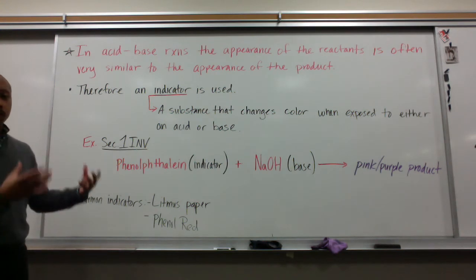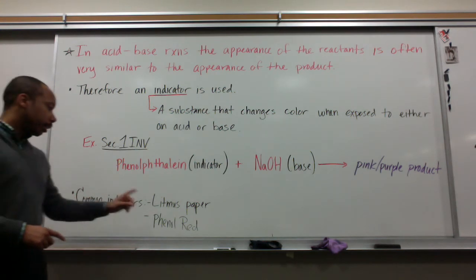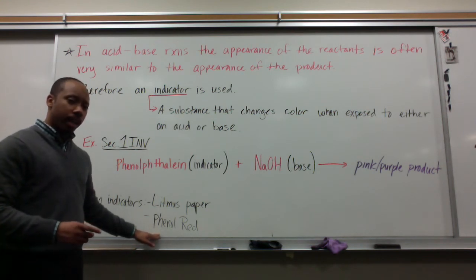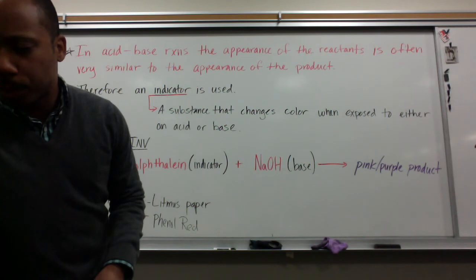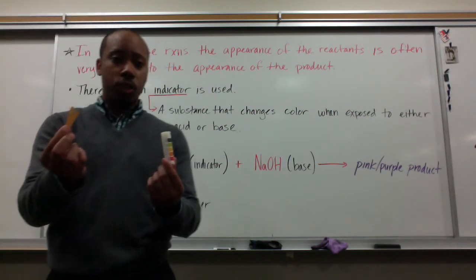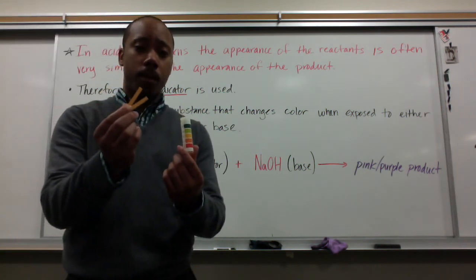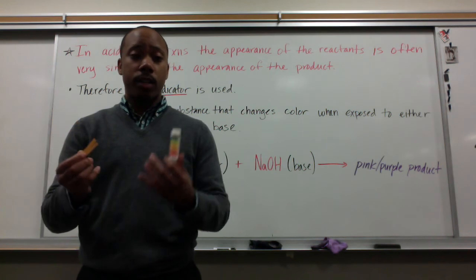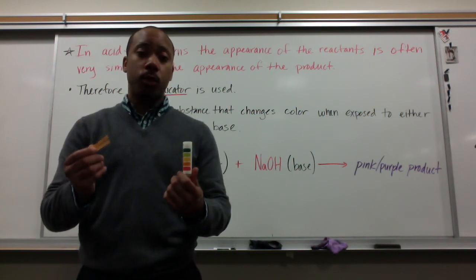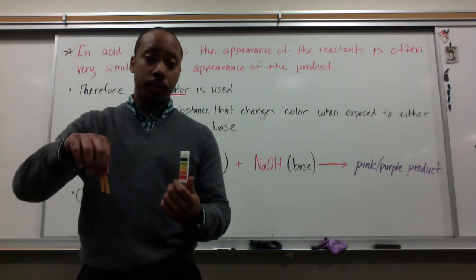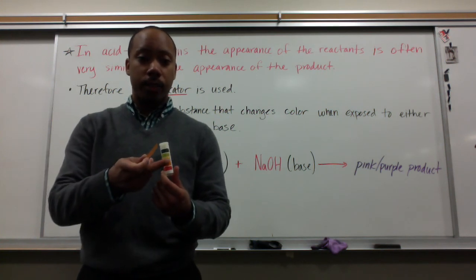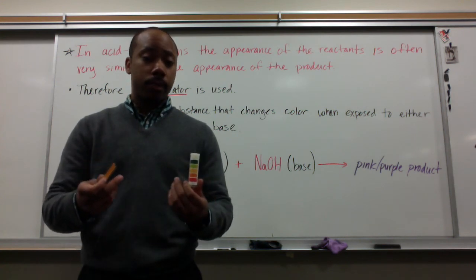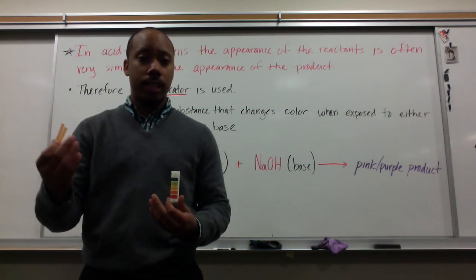Another common indicator is litmus paper, and the other is phenol red. We'll talk about phenol red next class. Litmus paper, which we used in Chapter 2, comes as little pieces of paper. We use them when we're talking about whether a solution was a metal oxide or a non-metal oxide, and if that solution was acidic or basic. We dip these into the different solutions and they turn a degree of colors, indicating a certain pH level, which tells us whether the solution is acidic or basic.